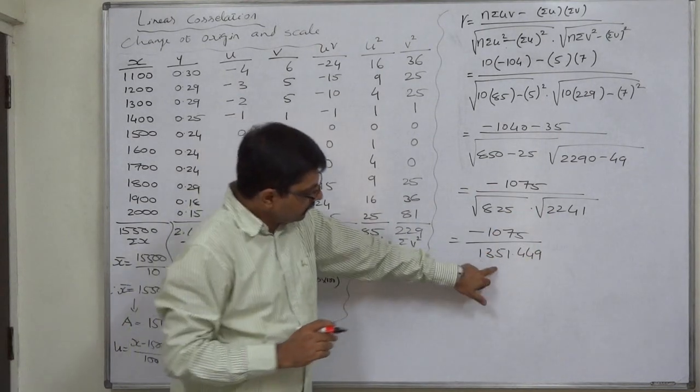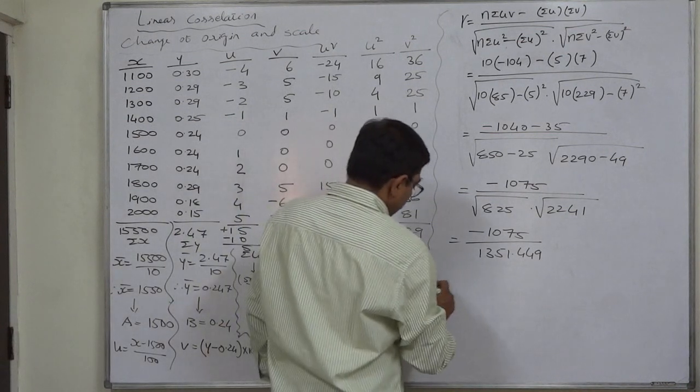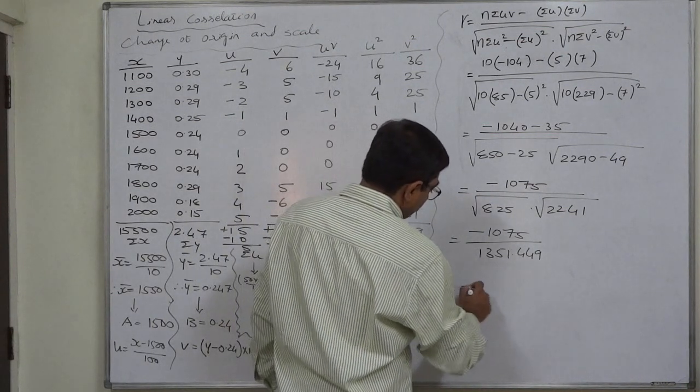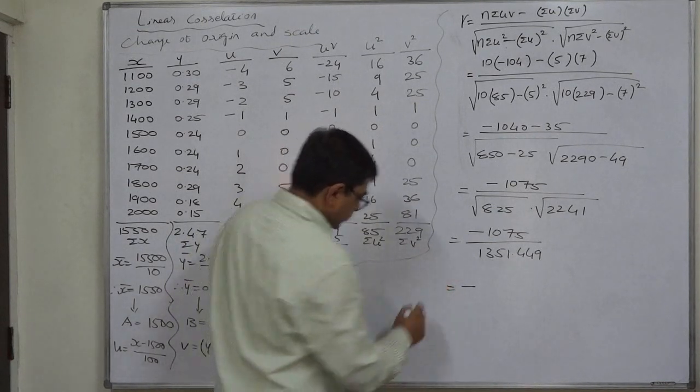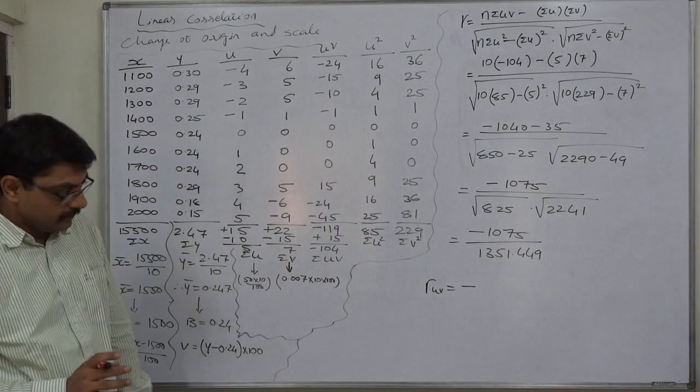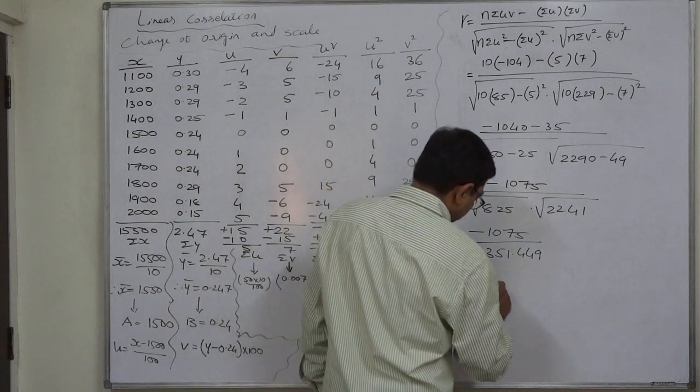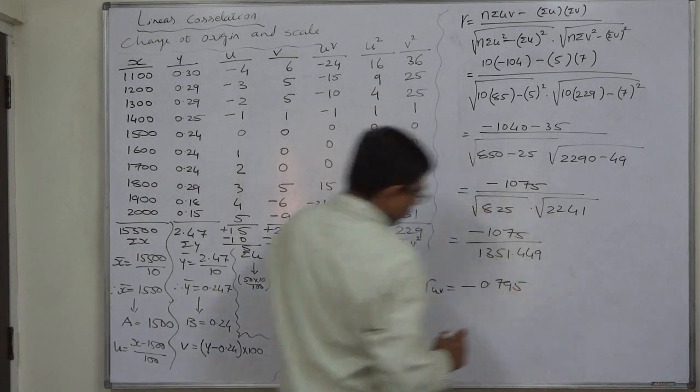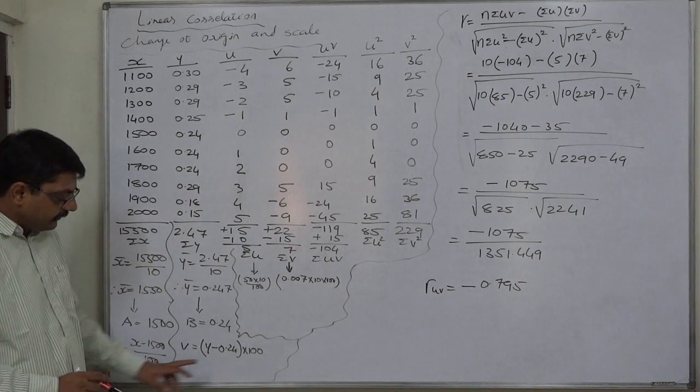Ultimately we get 1,351.449 - the multiplication of square roots of the two values. First multiply these two, then take the square root; ultimately we get 1,351.449. So the value of coefficient of correlation between u and v is minus 0.795. Now u is the result of change of origin and scale in x, and v is the result of change of origin and scale in y.